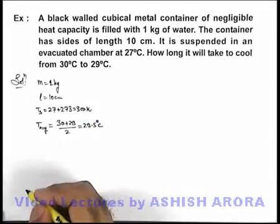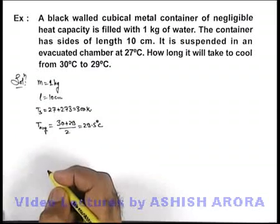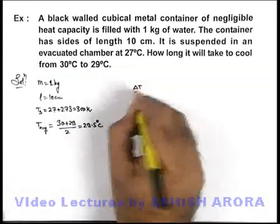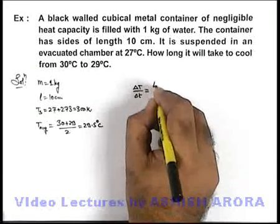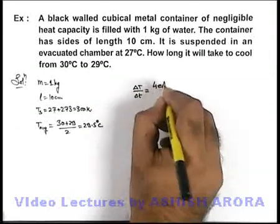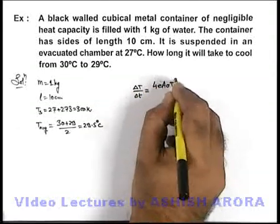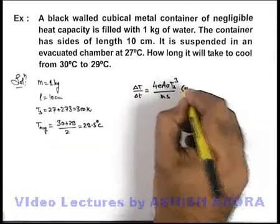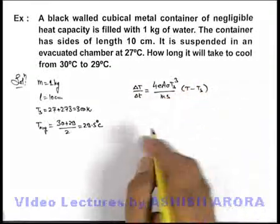Now we can directly use the average form of Newton's law of cooling: ΔT/Δt is equal to 4eAσTs³ divided by ms, multiplied by (T minus Ts).